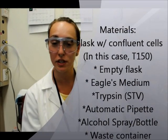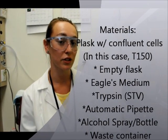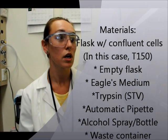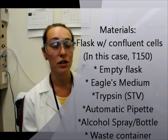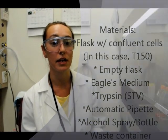You're going to need the flask with the cells you're going to split, a new flask you're going to put your cells into, eagles medium, trypsin, a waste container, automated pipette, and an alcohol spray bottle to sanitize everything.